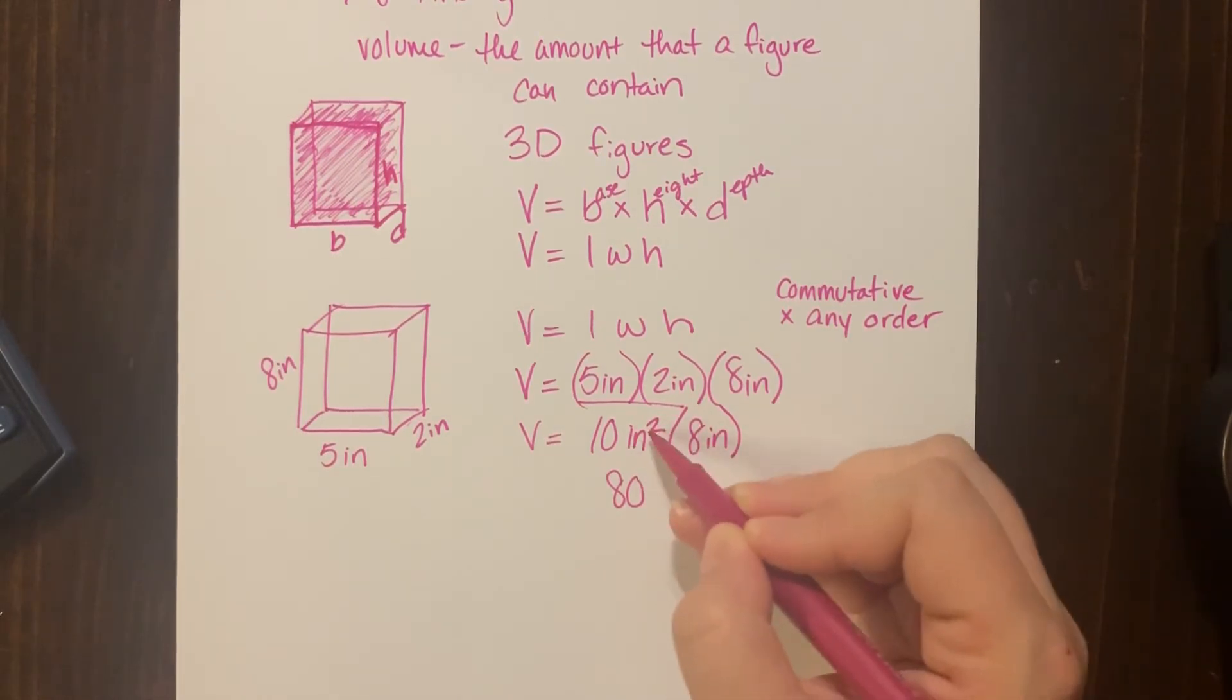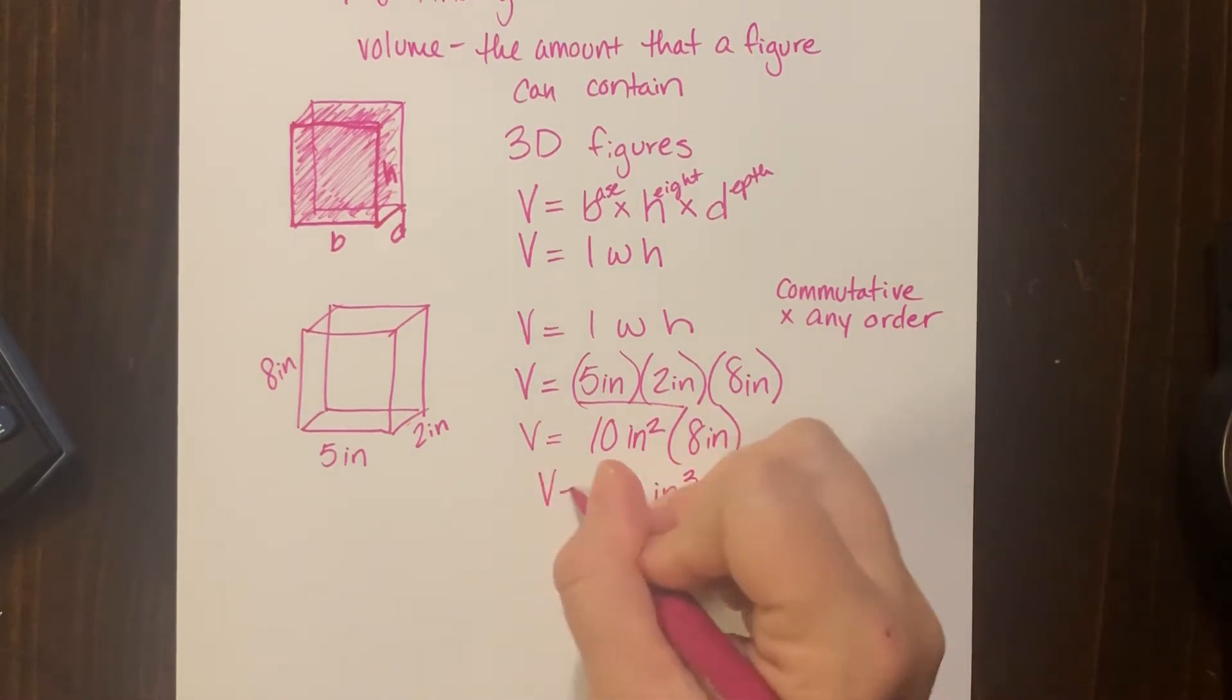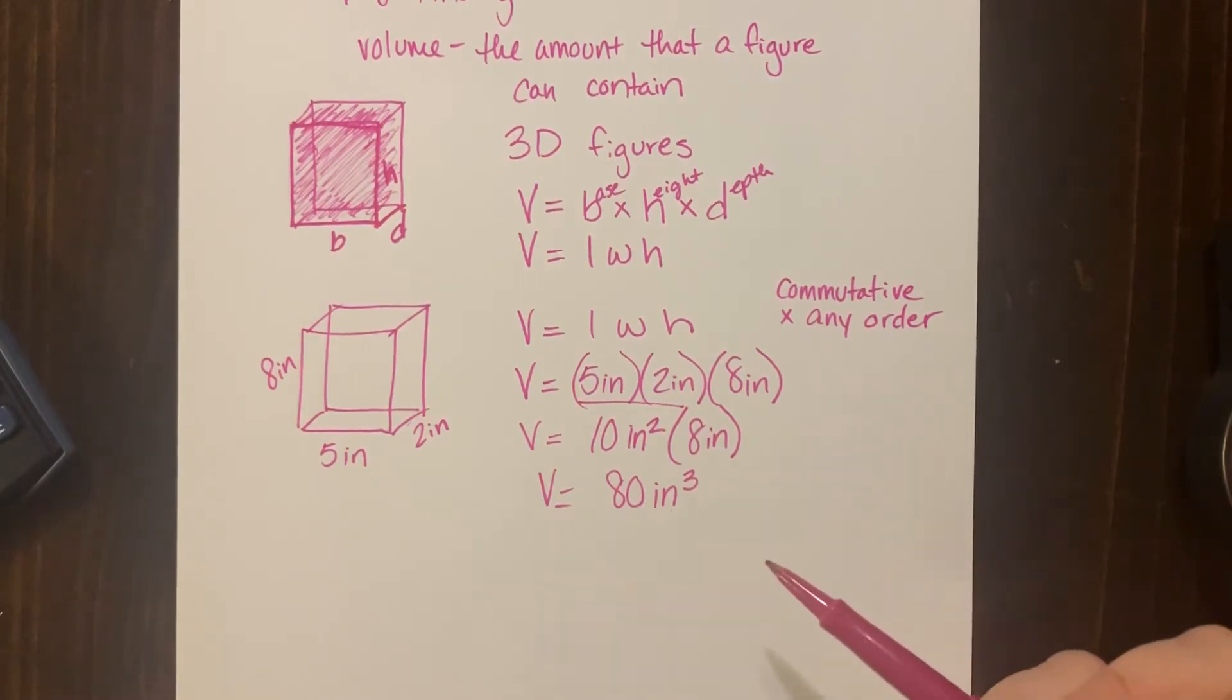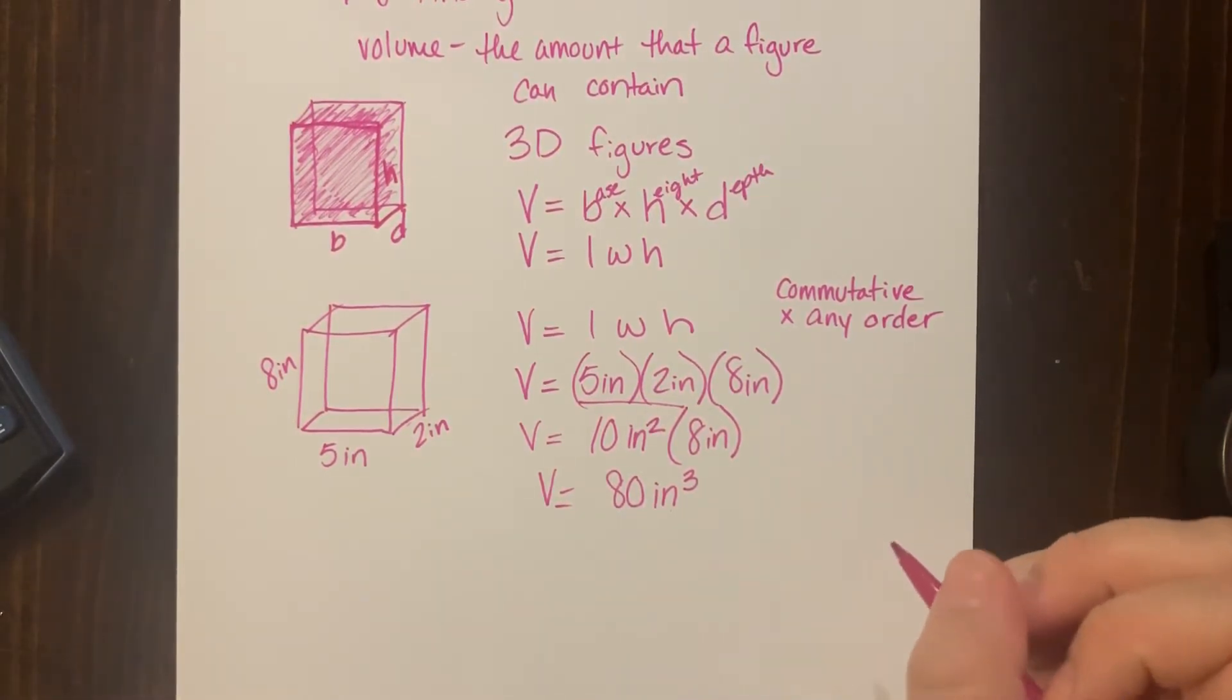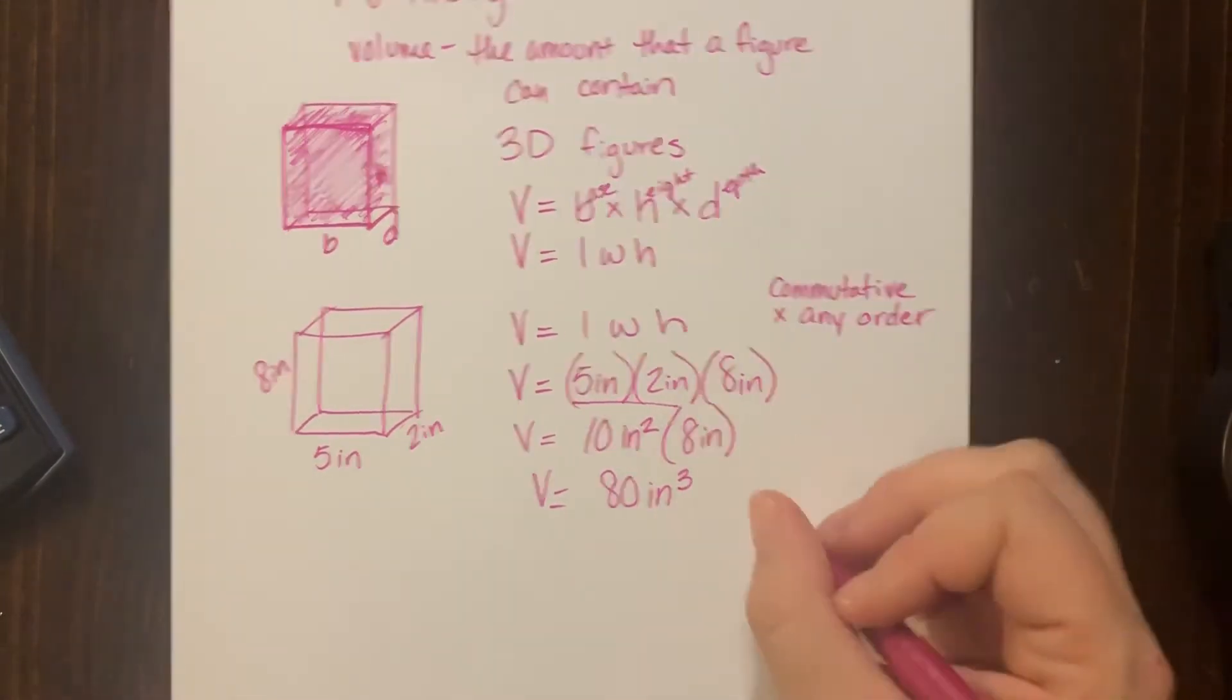Two inches times another inch—that's inches cubed, right? Notice I have one, two, three inches being multiplied by themselves. Anything being multiplied by itself gets the exponent, so I have three inches being multiplied by each other, and that's how I got the three. The way I look at it is I multiply three dimensions, so it gets a three. When I do area, I multiply two dimensions, so it gets a two. It's kind of how I think about it.